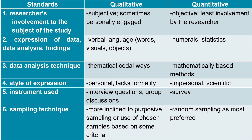Starting with researchers' involvement: a qualitative researcher is more involved to the topic or subject of the study since they do not provide data from the results of a computation. They need to involve their own understanding of participants' answers to interpret gathered data, making qualitative research somewhat subjective. On the other hand, a quantitative researcher is not that involved with respondents — they facilitate distribution of survey questionnaires and interpret gathered data through mathematical formula or statistical tools.